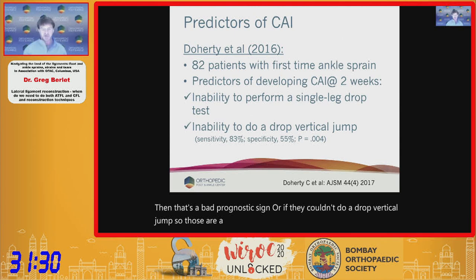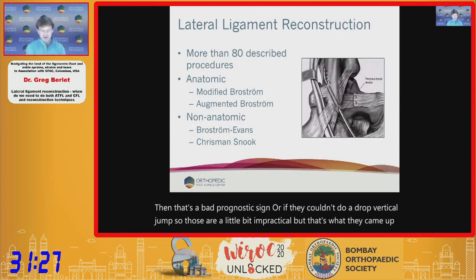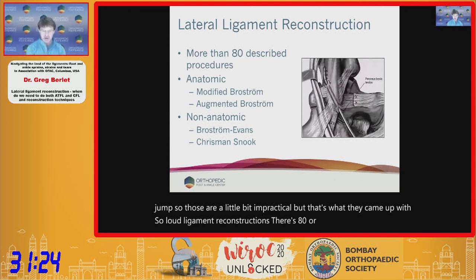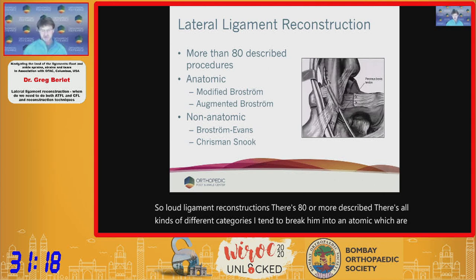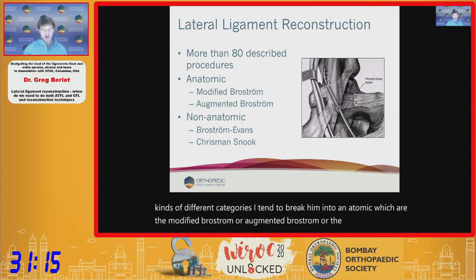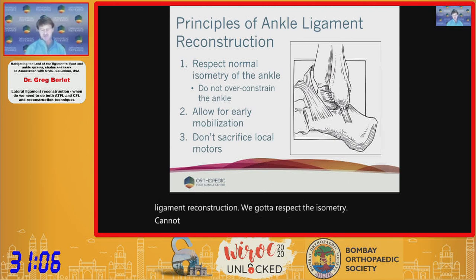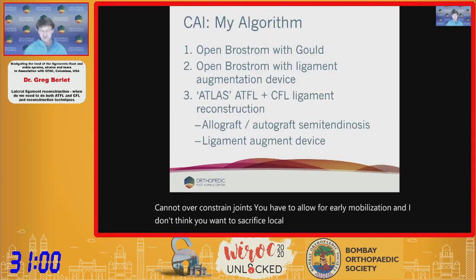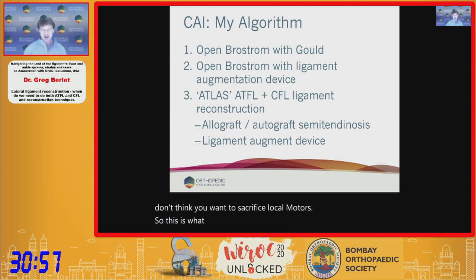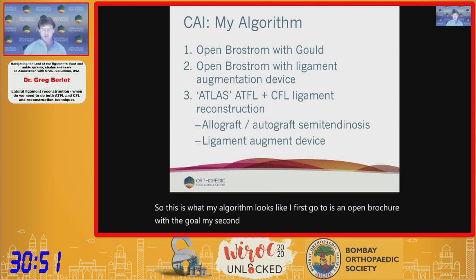There are 80 or more described lateral ligament reconstructions. I break them into anatomic — the modified or augmented Brostrum — and non-anatomic, such as the Chrisman-Snook. The principles of ankle ligament reconstruction are: respect isometry, avoid over-constraining joints, allow early mobilization, and don't sacrifice local motors. My algorithm starts with an open Brostrum-Gould, then an open Brostrum with a ligament augment device, then the ATLAS technique.